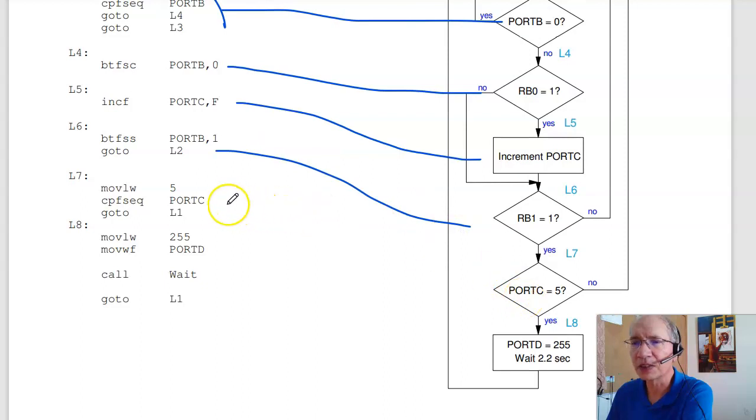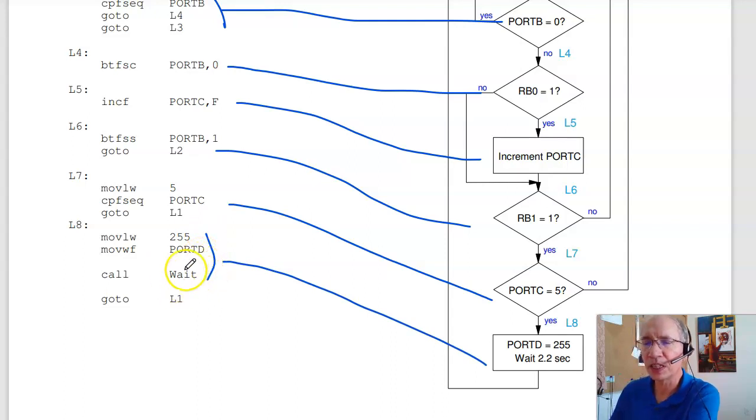Otherwise, you get down here. Check if port C is equal to 5. Move 5 to W, compare, skip if equal. If it is equal, I skip. Otherwise, go back to label 1. If I skip, I turn on all the lights on port D. Wait 2.2 seconds. That's the previous code that we wrote. And then go back to label 1. So that is test number 1 for ECE 376.